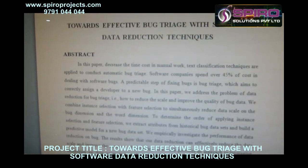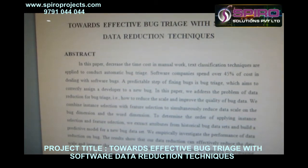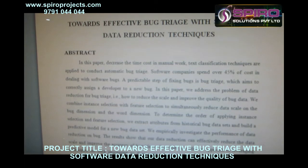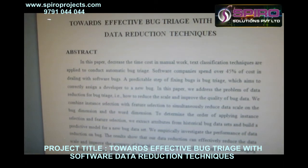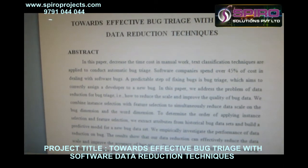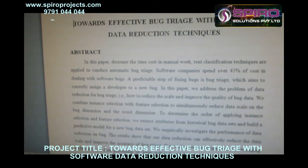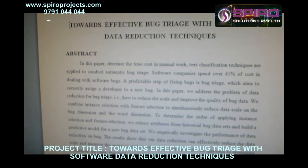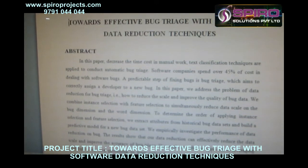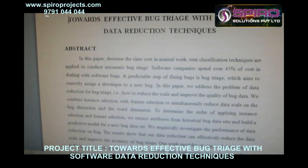Software companies spend over 45% of cost in dealing with software bugs. A predictable step of fixing a bug is bug triage, which aims to correctly assign a developer to new bugs.